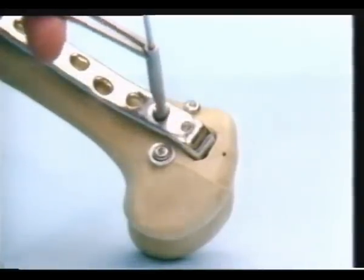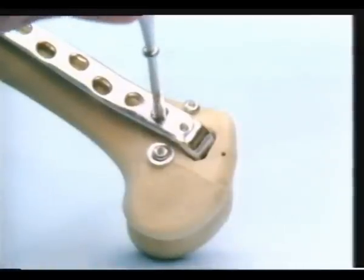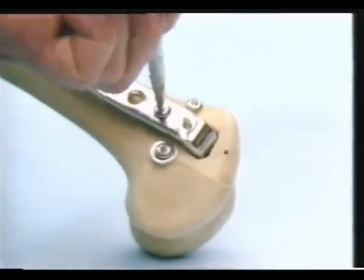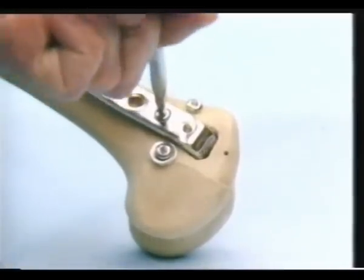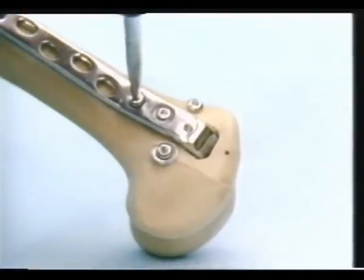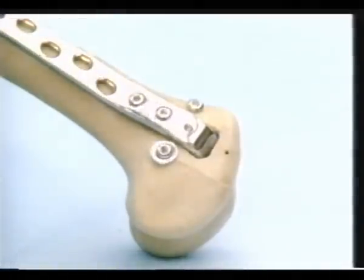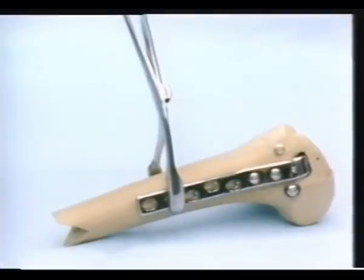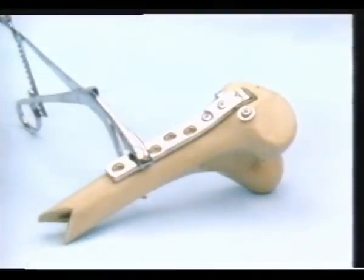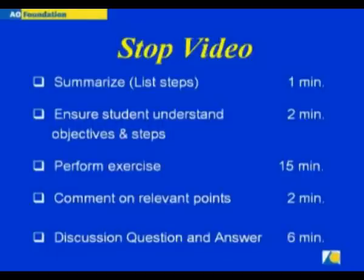Additional fixation of the plate to the distal fragment is accomplished with two cancellous screws. It is only now that reduction against the shaft fragment is performed using a reduction clamp. Once the reduction is satisfactory, the tension device is applied.